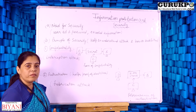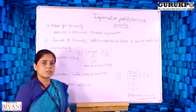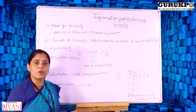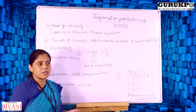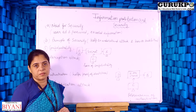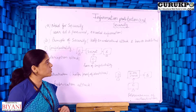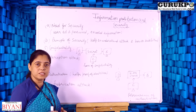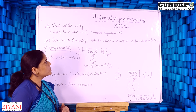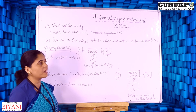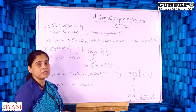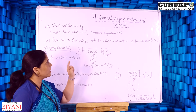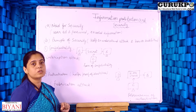When we talk about computers, in earlier computers there was very little requirement for security because data was not considered important. Nowadays, data is very important — in computers, on the internet, and in networks. Meaningful data is called information, while raw data means unprocessed, raw information.